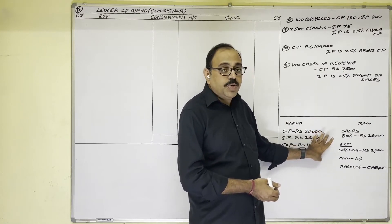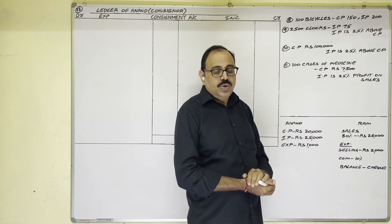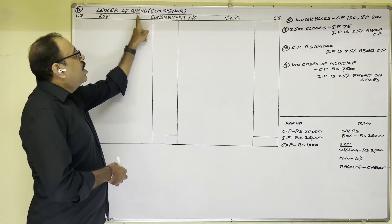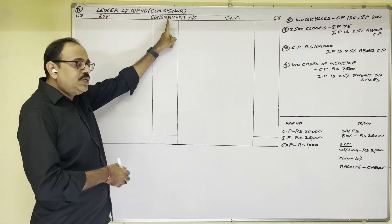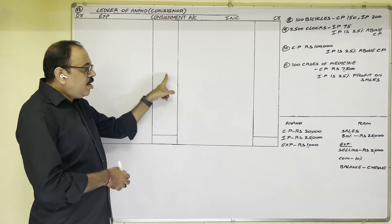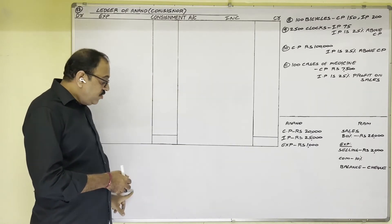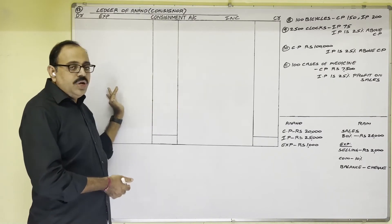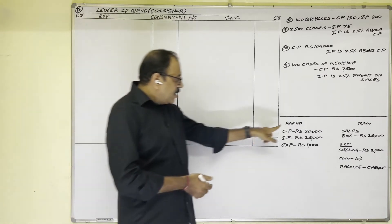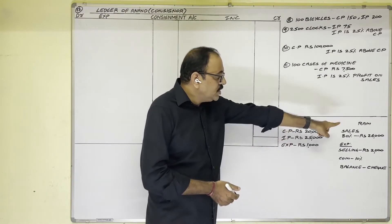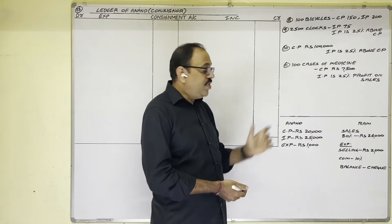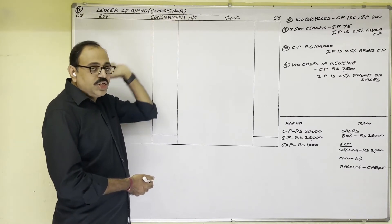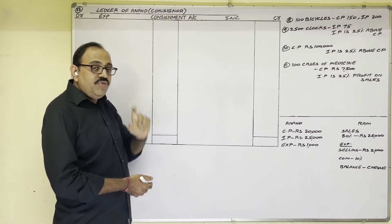With this information we are asked to prepare the consignment account. Who prepares the consignment account? The consignor. Therefore the heading is: ledger of Anand, consignor, in his books. Actually we have to prepare three accounts — consignment account, consignee's account (Ram's account), and goods sent on consignment account — but in this problem only the consignment account is asked. When goods are sent on consignment, in the consignor's books the entry is: consignment account debit, to goods sent on consignment account.